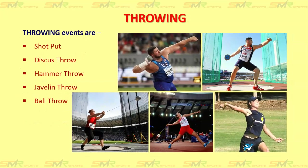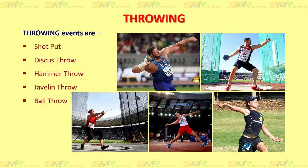Next are the throwing events. Throwing events are shot put, discus throw, hammer throw, javelin throw and ball throw. The pictures on the screen show — top left is shot put, next is discus throw, and the bottom three: the left picture is hammer throw, the middle one is javelin throw and the rightmost is ball throw. Ball throw is newly introduced by the Athletic Federation of India for the junior category.